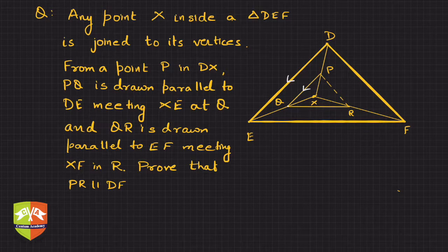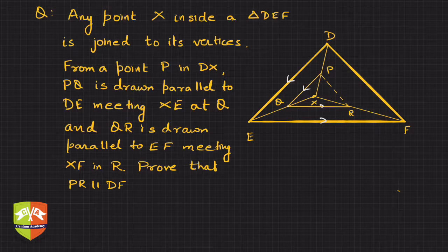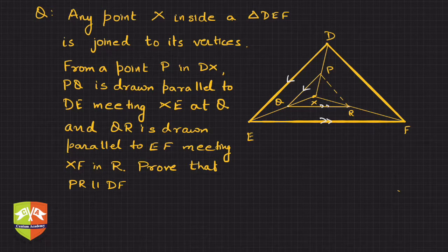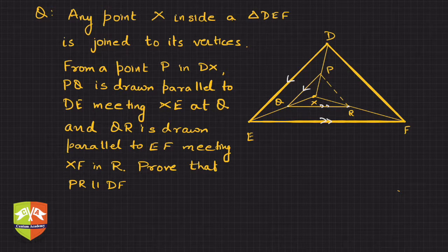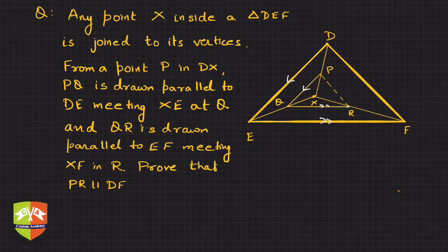And from Q, QR is drawn parallel to EF. So these are the two parallel lines such that this point is R. You have to prove that PR is also parallel to DF. This is the question.